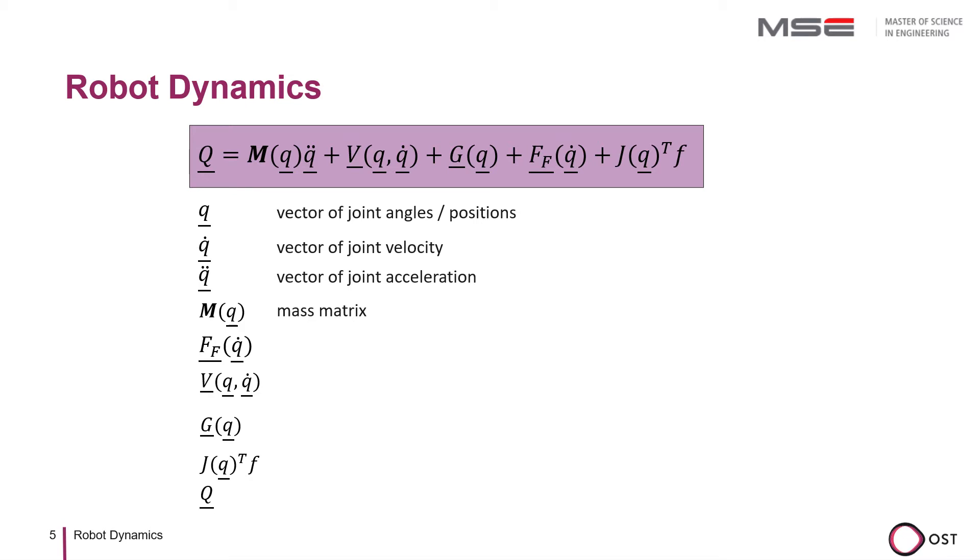The mass matrix represents all masses and moments of inertia of the robot that depends on the generalized robot coordinates. For example, the inertia of a robot arm about the z axis depends on whether the arm is extended or retracted.